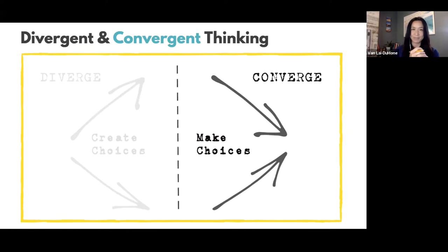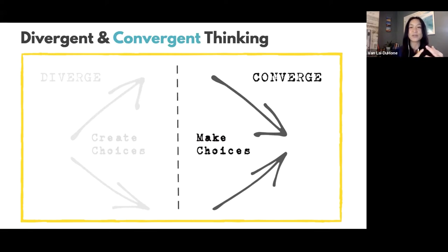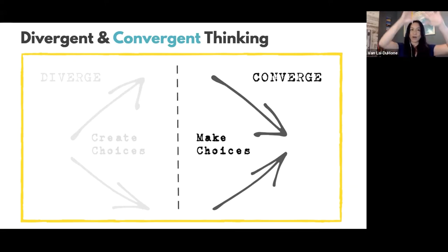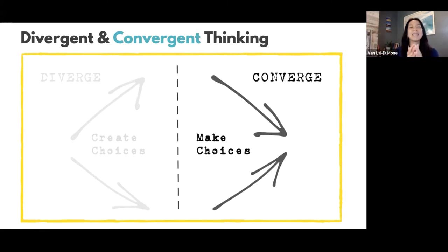The principles of convergent thinking are: you're going to apply criteria, you're narrowing down your ideas, and you're being deliberate. An example of this would be — let's say you have all your ideas now, and now you're going to set your criteria.